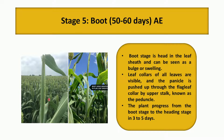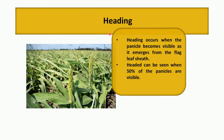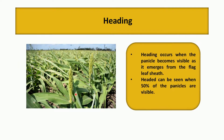The panicle is pushed up through the flag leaf collar by the upper stalk, known as the peduncle. From the boot stage to the heading stage it takes three to five days. At the heading stage, the panicle becomes visible and emerges from the flag leaf sheath. Heading is considered when 50 percent of panicles are visible.